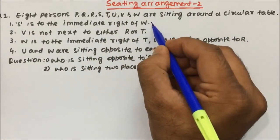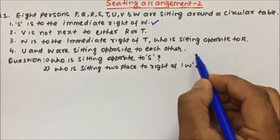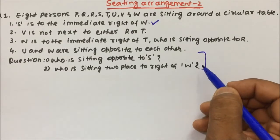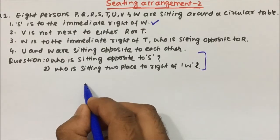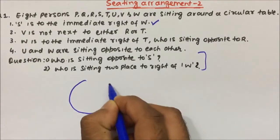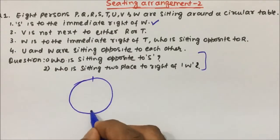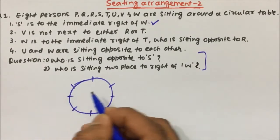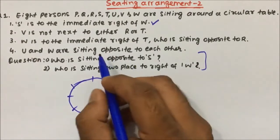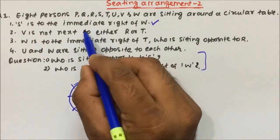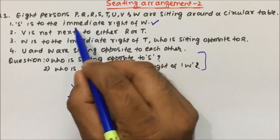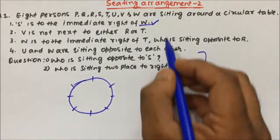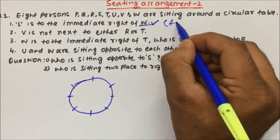There are 4 statements given followed by 2 questions. Let us draw the diagram for the confirmed statements. There are 8 people, so we draw a circular table with positions 1 through 8. The first statement is: S is to the immediate right of W, and all are facing towards the center.